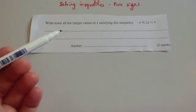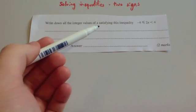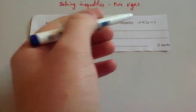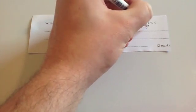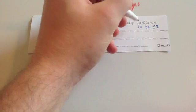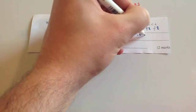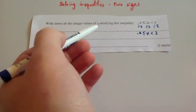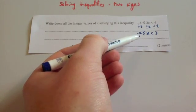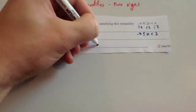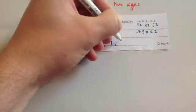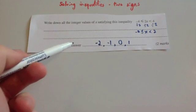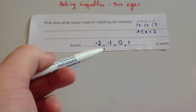Our last question: write down all the integer values of x which satisfy minus 4 is less than or equal to 2x, which is less than 4. Divide everything by 2: minus 2 is less than or equal to x, which is less than 2. It's bigger than or equal to minus 2 but less than 2, so the integer values are minus 2, minus 1, 0, and 1 — but not 2, because x must be strictly less than 2.